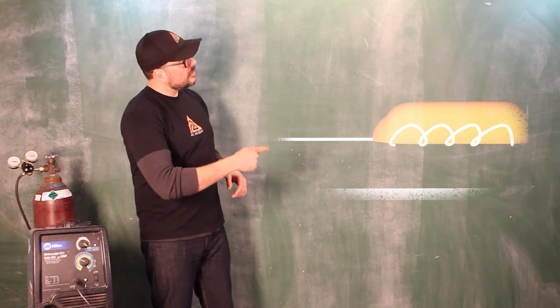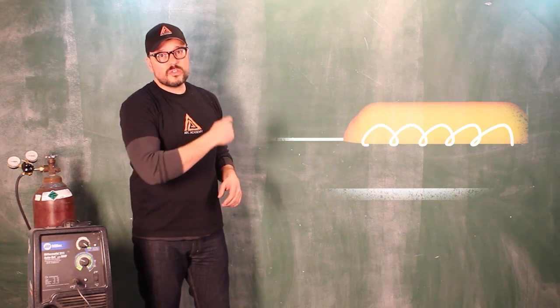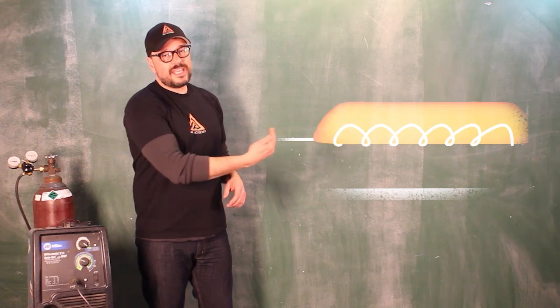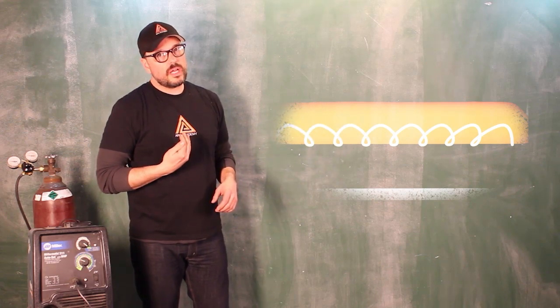You're going to want to try to get to the front toe edge of the puddle, taking it with you as you drag through the weld.